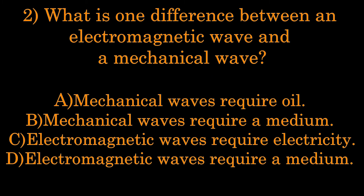Number 2: What is one difference between an electromagnetic wave and a mechanical wave? A. Mechanical waves require oil. B. Mechanical waves require a medium. C. Electromagnetic waves require electricity. D. Electromagnetic waves require a medium.